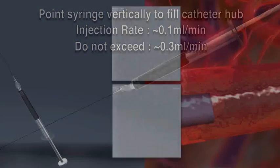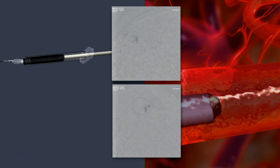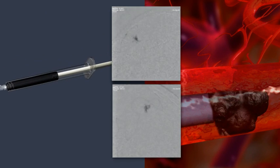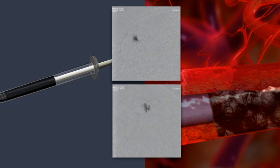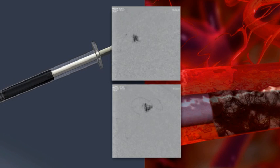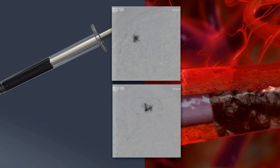Begin fluoroscopic imaging just prior to displacing the catheter dead space volume. If visualization is lost at any time during the procedure, halt Onyx delivery until adequate visualization is re-established.